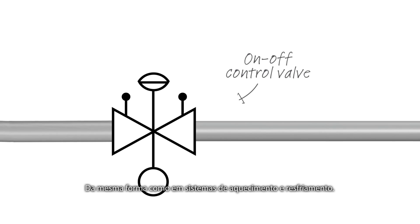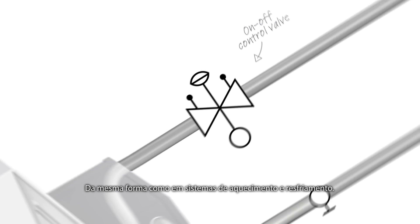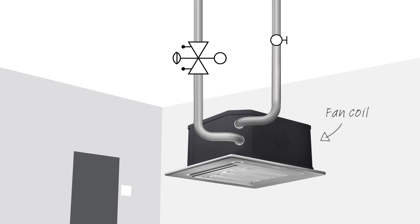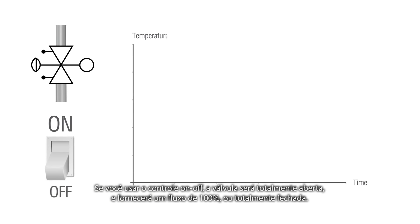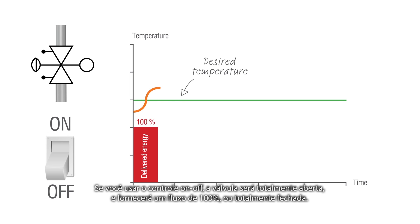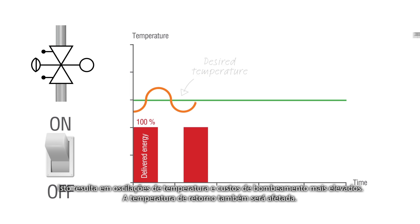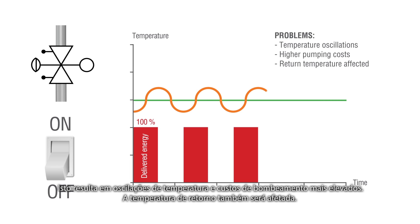Similarly as in heating and cooling systems. If you use on-off control, the valve is either fully open and delivers 100% flow or fully shut. This leads to temperature oscillations and higher pumping costs, and the return temperature is also affected.